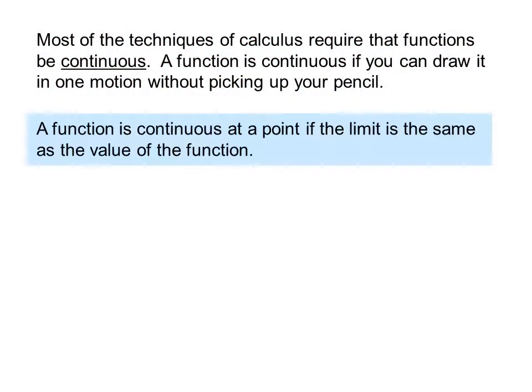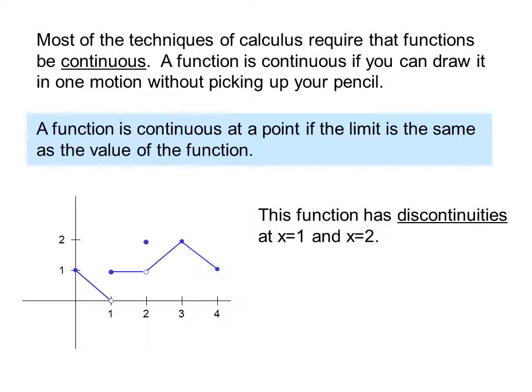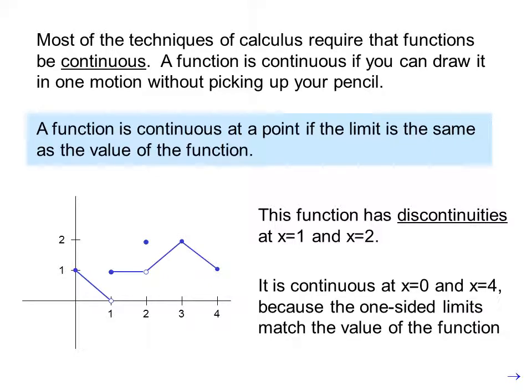A function is continuous at a point if the limit is the same as the value of the function. This function has discontinuities at x equals 1 and x equals 2. It is continuous at x equals 0 and x equals 4 because the one-sided limits match the value of the function.